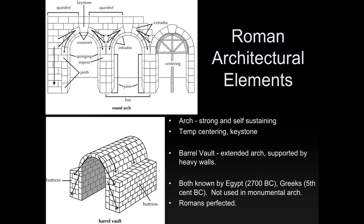So how do you make an arch? It's shown here, and I'm going to give you a link to a video a little bit later when we talk about Gothic art that will show this in three dimensions. The first thing is they have a form called a centering, which will be used over and over again in building. You build up the bricks from the bottom, and then when you get to the middle, you put in what's called the keystone. Once that is put in, it's like a lock and you can take out the centering and it will stand on its own.